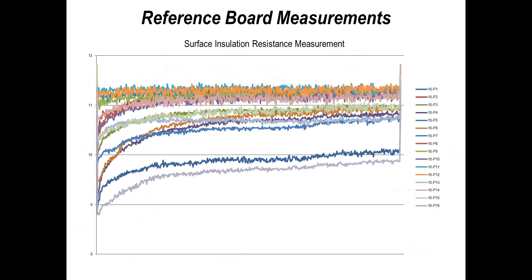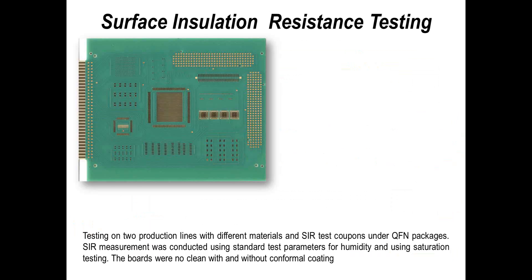These are the parameters typically used and highlighted in one of the IPC standards — you can adjust and modify them to suit, with discussion with the customer, but these are typical SIR testing parameters. Boards are taken after processing and put into a chamber, and direct measurements are taken on those patterns over a period of time. Initially when you put a board into high humidity, the resistance value drops quite quickly, then it recovers — as you can see with each of these traces. The basic failure criterion is anything below 10 to the 8th. Anything above would be perfectly acceptable. You'd also look visually on the samples for any forms of corrosion.